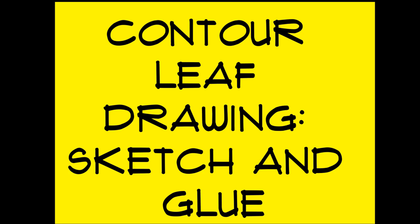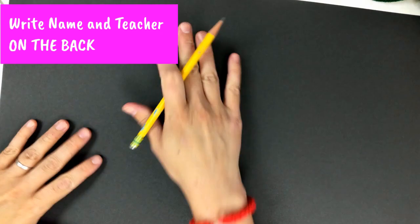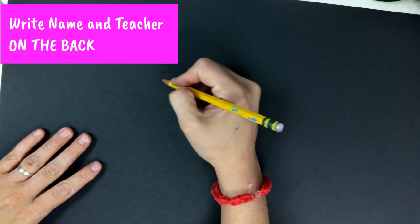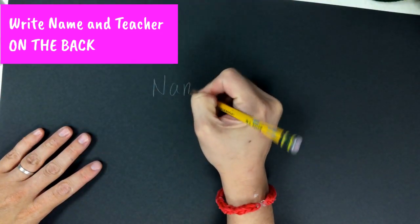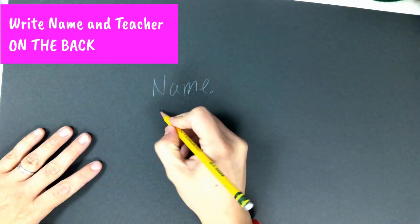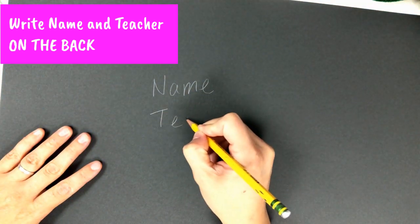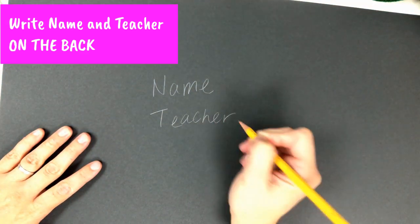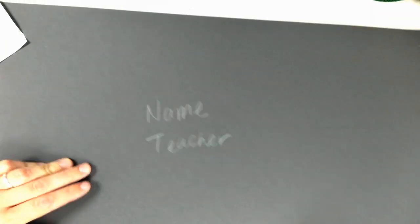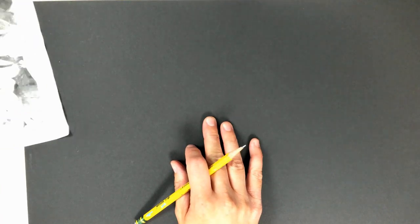Today I'm going to show you how to do a contour leaf drawing with sketching and gluing. First thing is write your name and teacher's name on the back in pencil. It will show up. Flip it over and then you're going to start drawing.